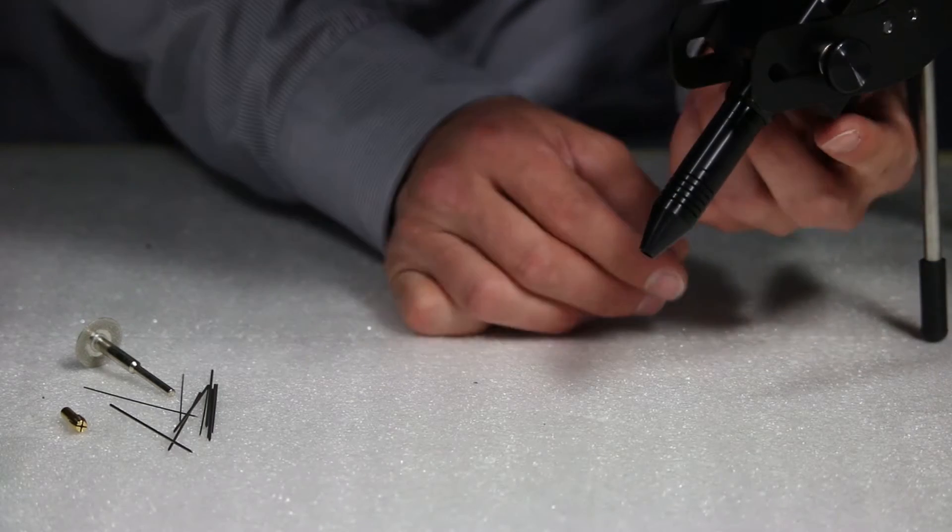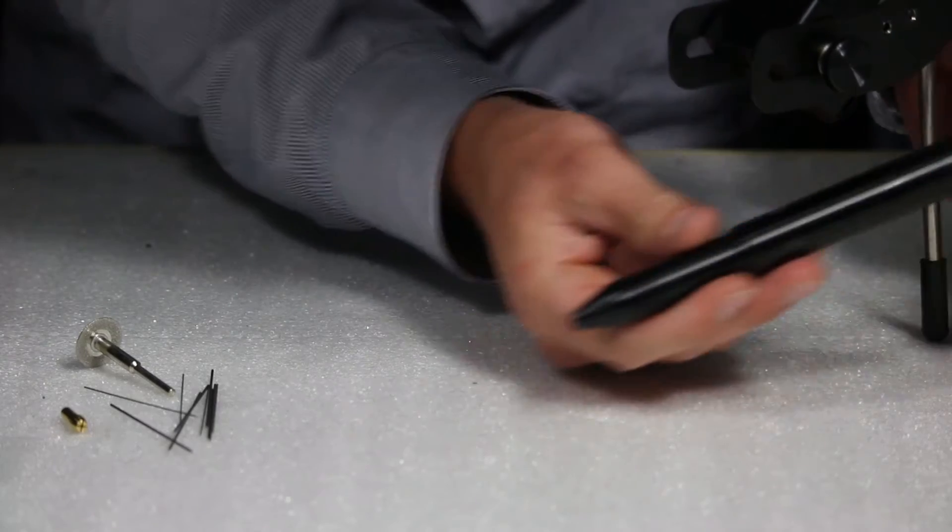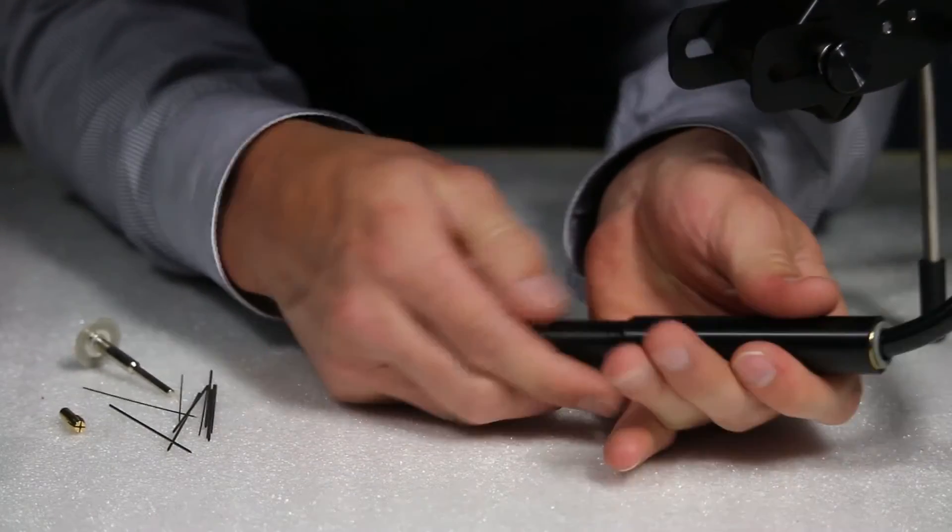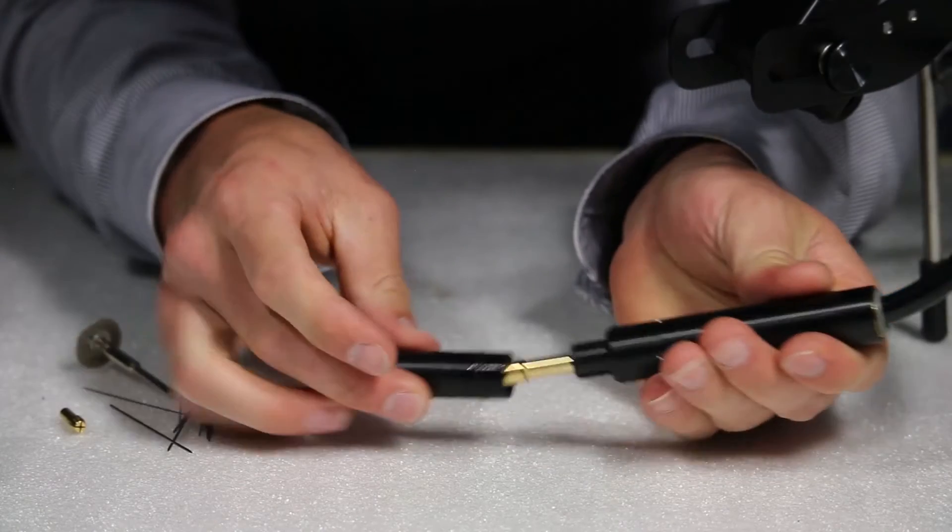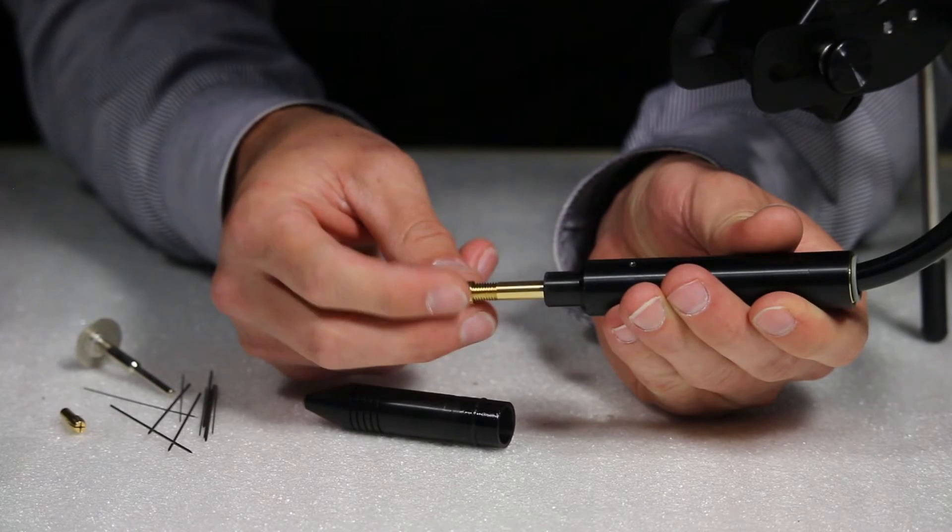Remove the stylus from the stylus holder. Pull off the stylus cap. Unscrew the collet cap and remove the 1mm electrode collet.